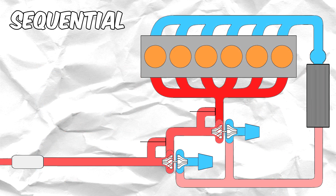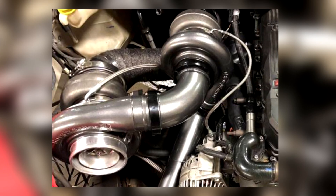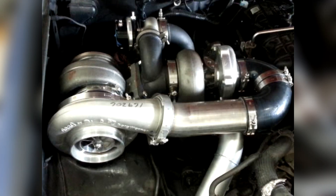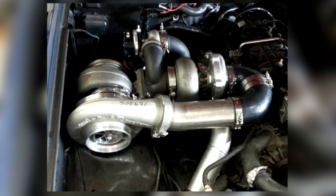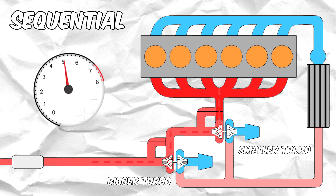Sequential turbos, also known as compound turbo systems, usually have different sized turbos — a smaller turbo and a larger turbo. However, there are sequential turbo systems that have the same size turbos, especially on the aftermarket scene. In a sequential turbo setup, when the engine is at low to medium RPM, the exhaust gases only flow into the smaller turbo in order to minimize lag. Then, once it reaches the mid to high RPM range, a valve allows the gases to also flow into the larger turbo.